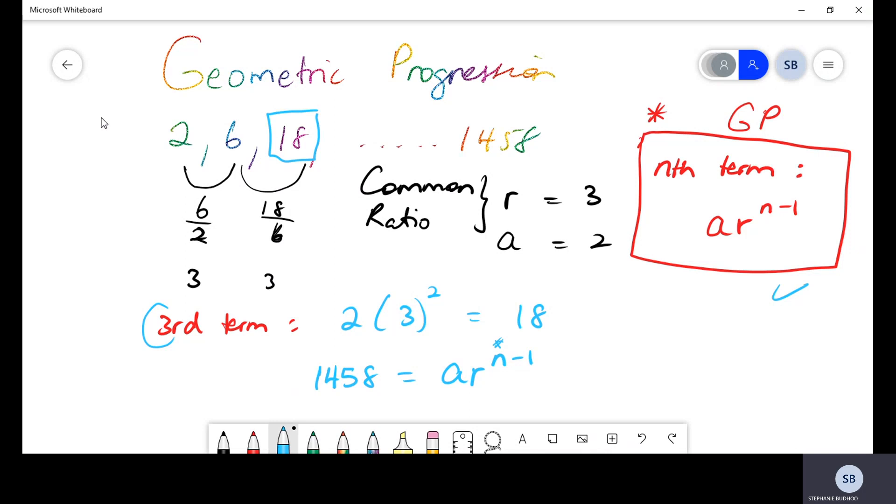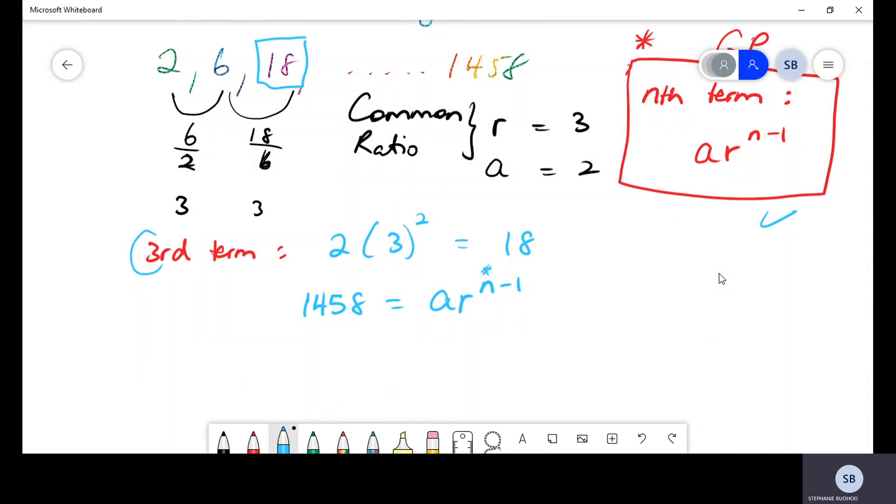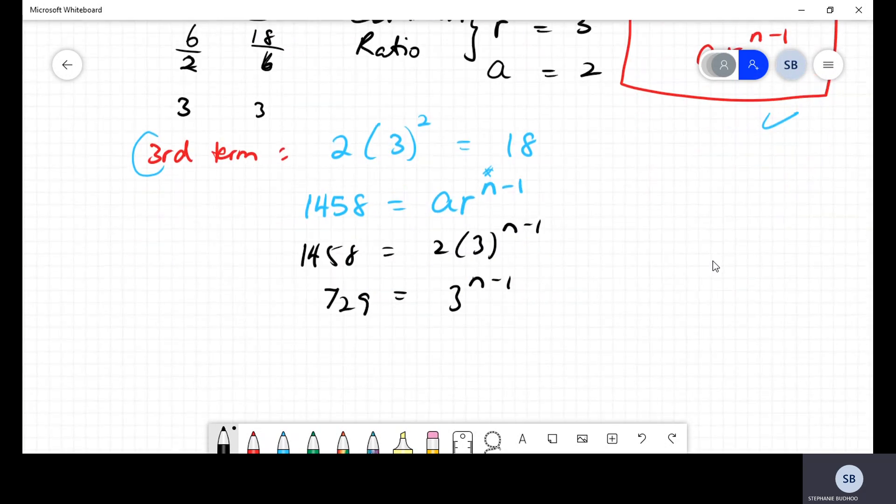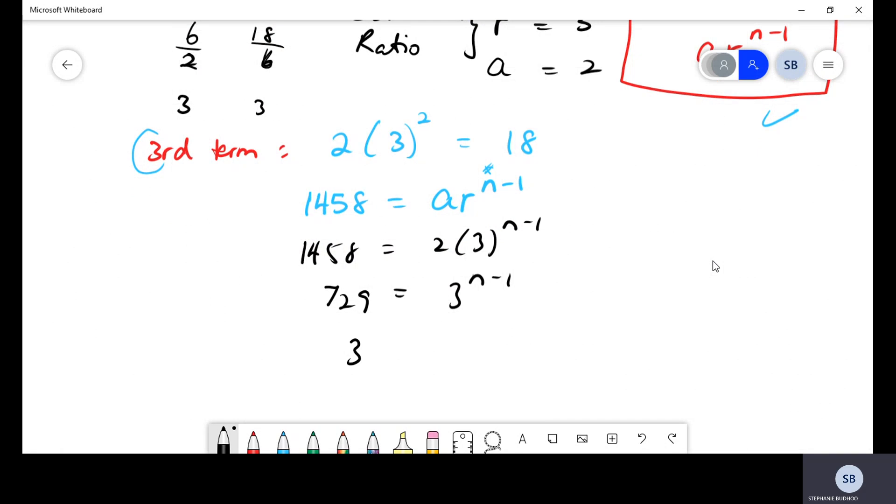Now, in this question, we know the values of A and R, so it's just a simple matter of substitution. You would get A is 2, R has a value of 3 to the power of N minus 1. Dividing throughout by 2 would give us 729 is equal to 3 to the N minus 1. Now over here, a very easy way to do this question, if you can see it, is simply to write both sides as powers of 3. Rules of exponents, if you have the base to be the same, you can equate your powers. So this would imply that N minus 1 must be 6, so therefore N has to be a value of 7.